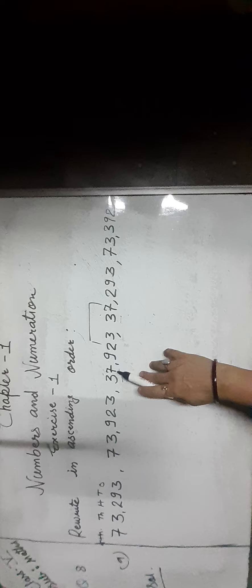The ten thousands place digit is 3 and it is also 3. Now we have to move to the next place, that is thousands place. Thousands place is 7 here and also 7 here. Now we move to hundreds place — that is 9 here and 2 here. Now, 2 is smaller than 9, so first we write 37,293.